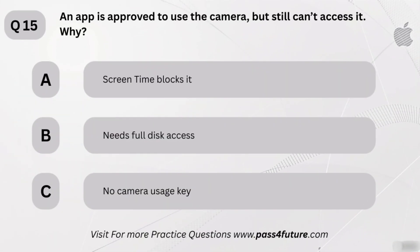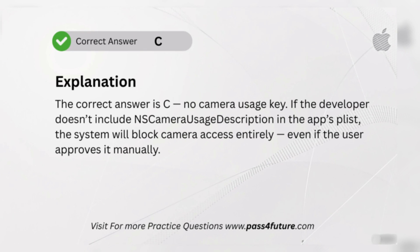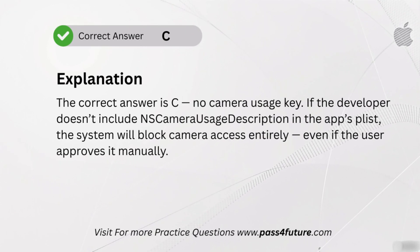An app is approved to use the camera, but still can't access it. Why? A. Screen Time blocks it. B. Needs full disk access. C. No camera usage key. The correct answer is C — no camera usage key. If the developer doesn't include NSCameraUsageDescription in the app's plist, the system will block camera access entirely, even if the user approves it manually.